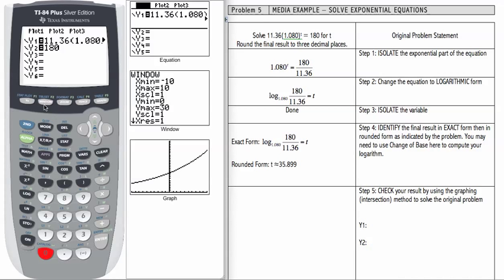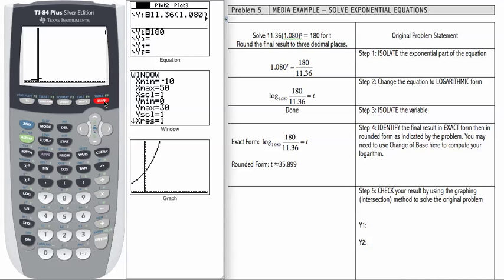Let's check our window always, because we notice with this graph we can't see the 180. So we need to make our x max 50, and let's make our y max 200. I believe that should help us. So there is our graph.